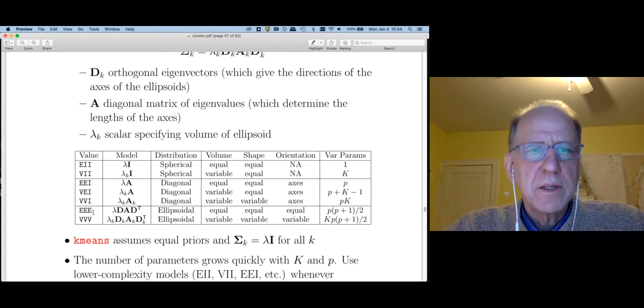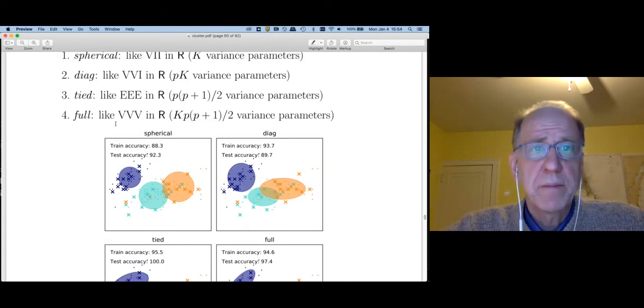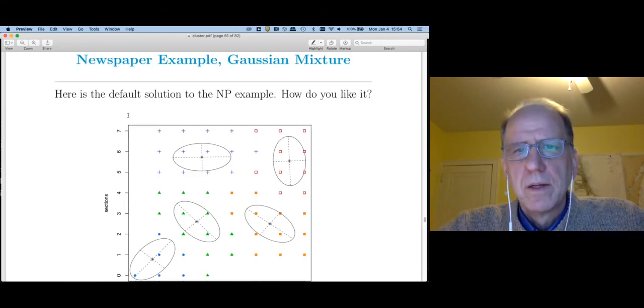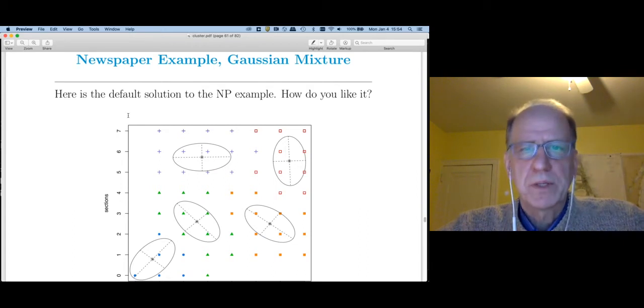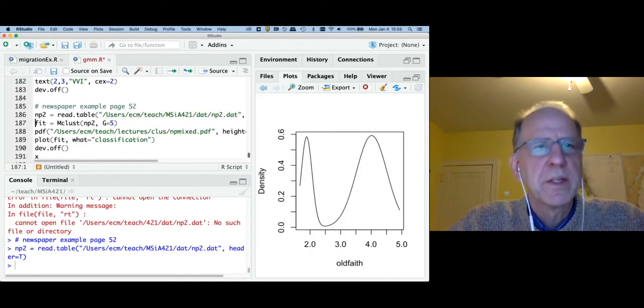Finally, EEE and VVV allow for within cluster correlations. EEE is the same as tied in Python, VVV is the same as full in Python. Let's now apply the Gaussian mixture to the newspaper example. I thought I would do this one live, so I just read in the data. Let's go fit the Gaussian mixture.